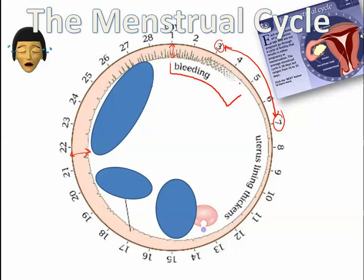After the bleeding stops, after those five days, the uterine wall begins to thicken again. You can see this counting days: day 1, 2, 3, 4, 5, 6, 7, 8, 10. Something really important happens around day 14.